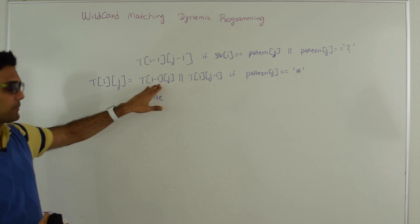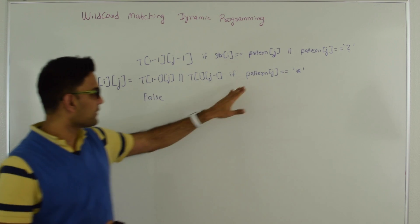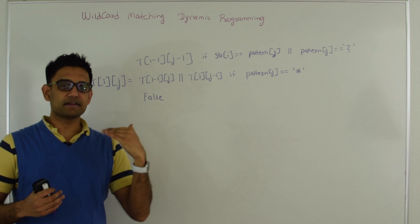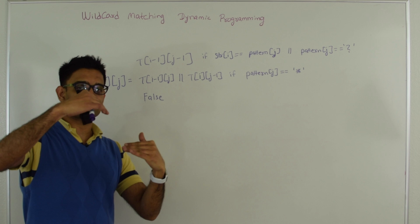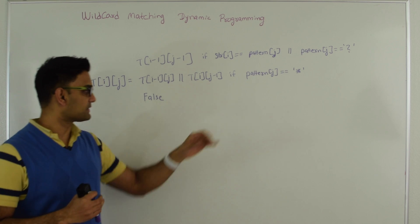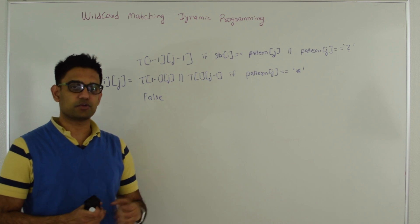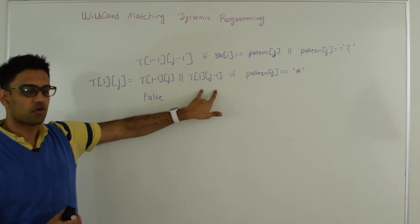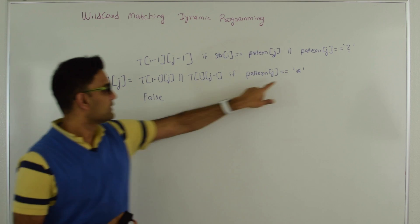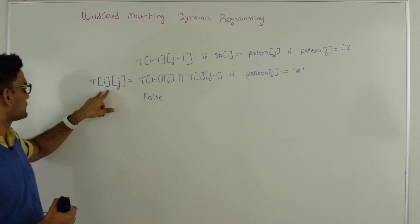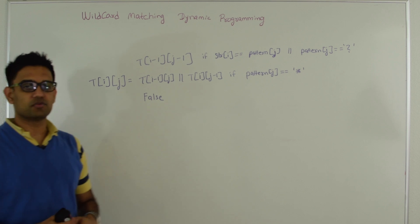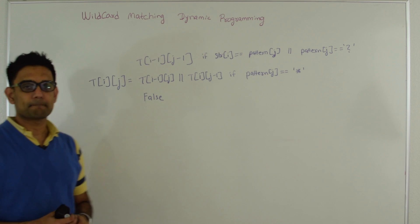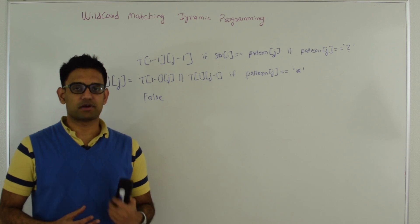Otherwise, T[i][j] equals T[i-1][j] or T[i][j-1] if pattern[j] is a star. T[i][j-1] means star represents a zero sequence of characters. T[i-1][j] means the star includes the i-th character. If either of those is true, T[i][j] becomes true. If none of these cases applies, T[i][j] is false. Next let's look at a concrete example to understand this approach.